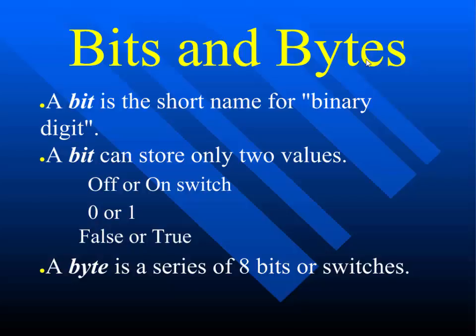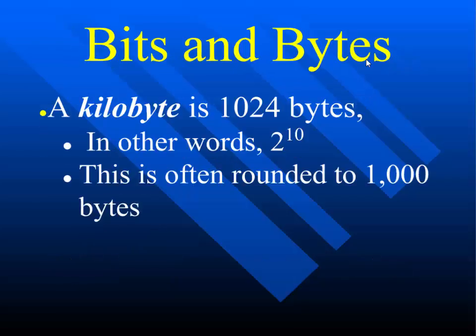A byte is a series of eight bits. A kilobyte is the next size larger — 1,024 bytes. The reason we say 1,024 is that it's an even multiple of two: two to the tenth. So it's a little bit over 1,000. Different from science class where kilo means 1,000 — in computer land, it's 1,024.